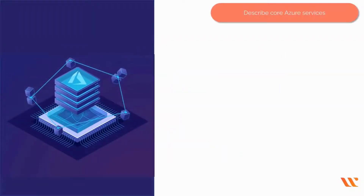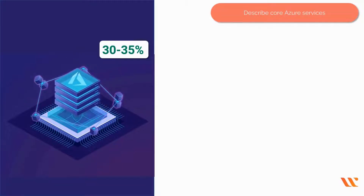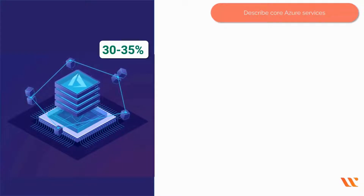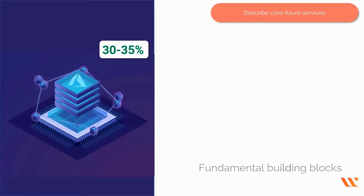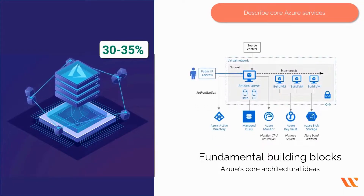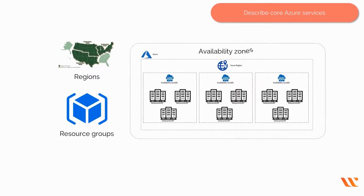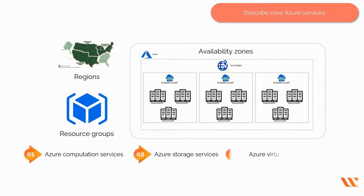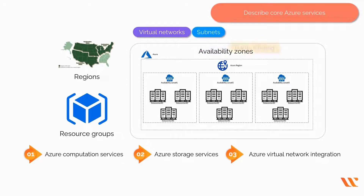Describe core Azure services: 30 to 35%. This portion has the highest weightage. You need to prepare the fundamental building blocks of Azure's core architectural ideas — features such as regions, resource groups and availability zones, Azure computation services, Azure storage services, on-premises network to Azure virtual network integration, virtual networks, subnets, traffic filtering and other Azure services.